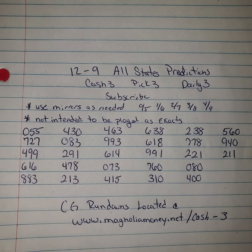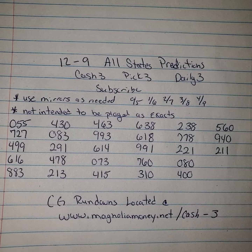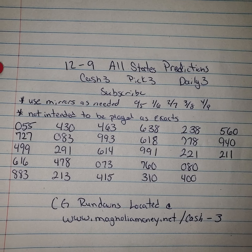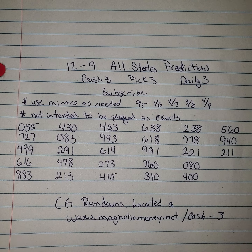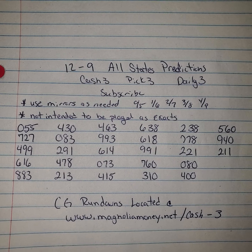So this is the 12-9 All-States Predictions list. This is good for your cash 3, pick 3, and daily 3 games for all draws, all states, for the entire day.